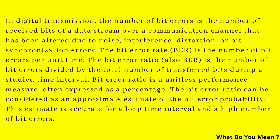The bit error ratio is the number of bit errors divided by the total number of transferred bits during a study time interval. Bit error ratio is a unitless performance measure, often expressed as a percentage. The bit error ratio can be considered as an approximate estimate of the bit error probability. This estimate is accurate for a long time interval and a high number of bit errors.